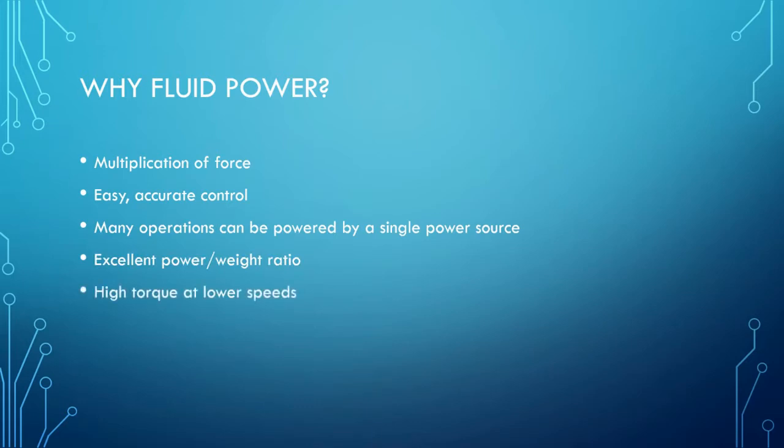Electrical power systems typically need to operate at very high speeds and use gearing to produce high torque. But fluid power systems can produce high torque at relatively low speeds, which can be advantageous in certain situations, like when high speeds might cause troublesome vibration.